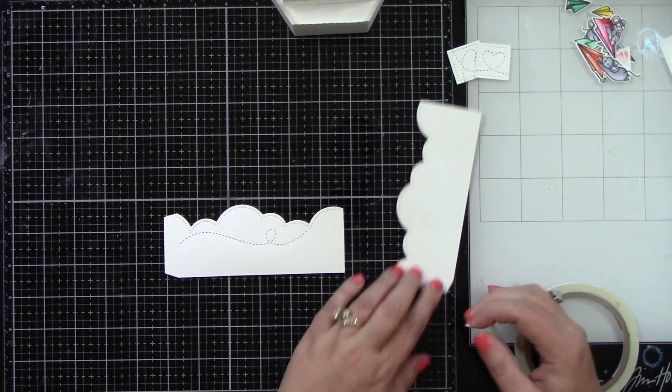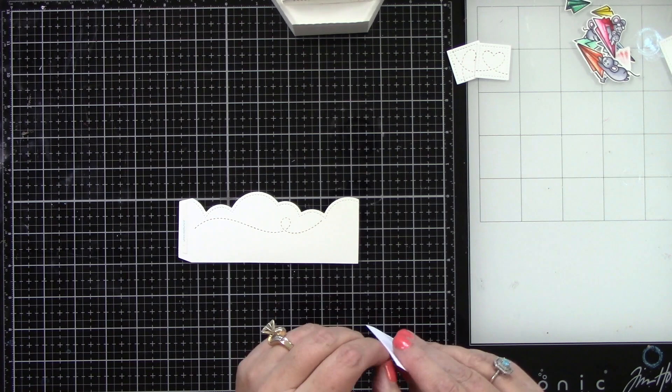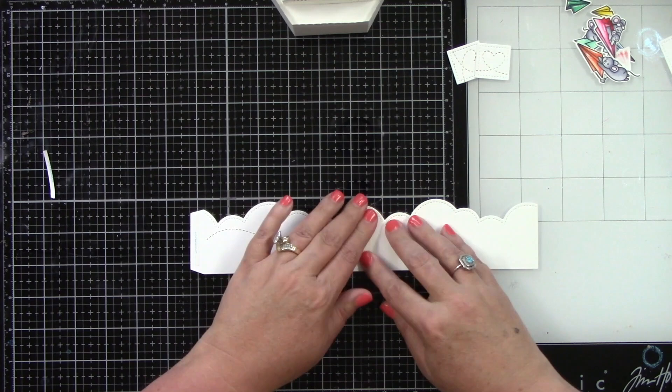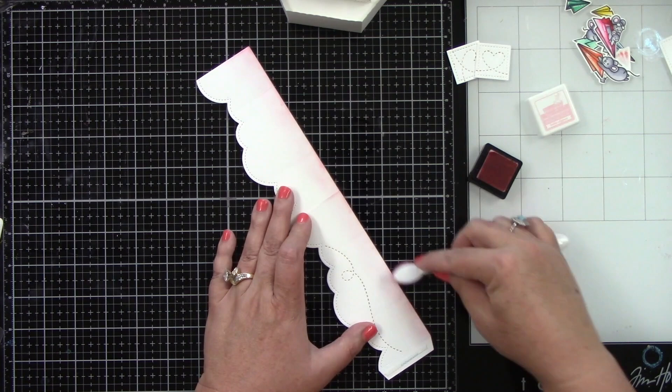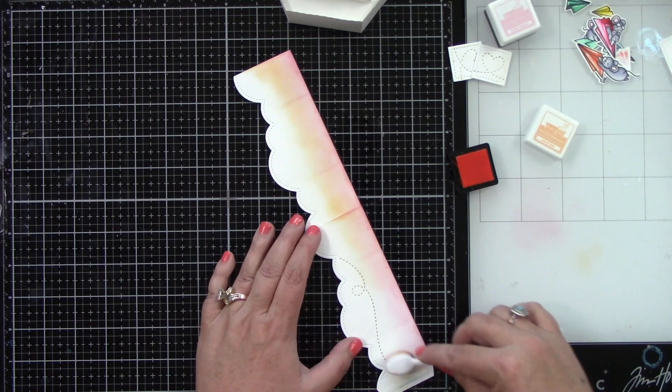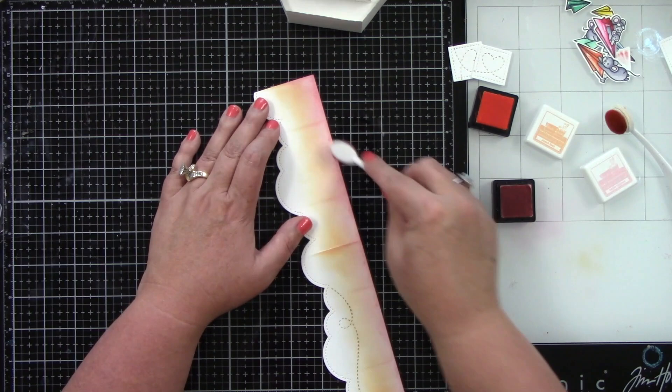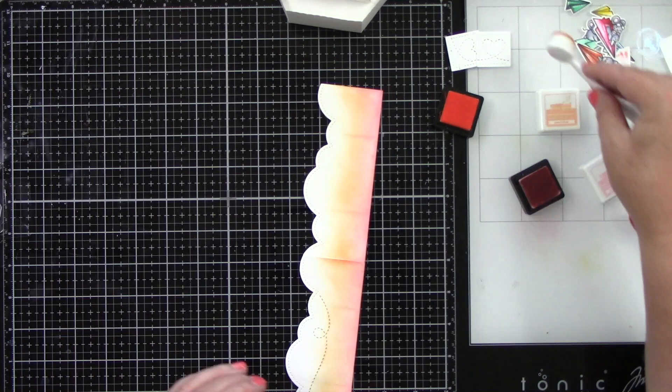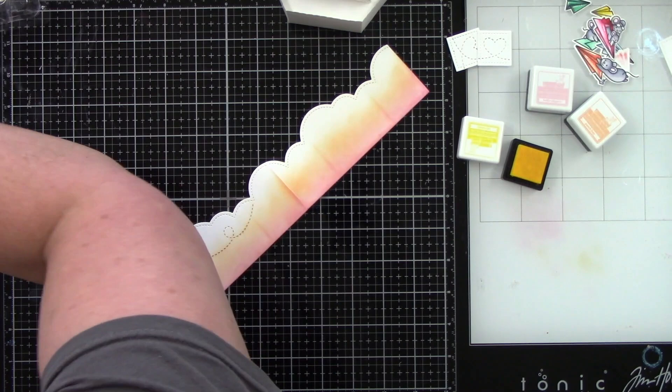Okay, so now we're going to adhere and ink up the cloud wraparound. I have not folded on the score lines yet because I want to do some ink blending. I am just going to fold on that one little one where we are going to adhere it together and then let's ink blend this. This is the only cloud that's going to have color. I am starting with ballet slippers, then I'm going to ink blend with peach fuzz and then finally finish off with lemonade. I want this to have a fun almost sunset feel to it.